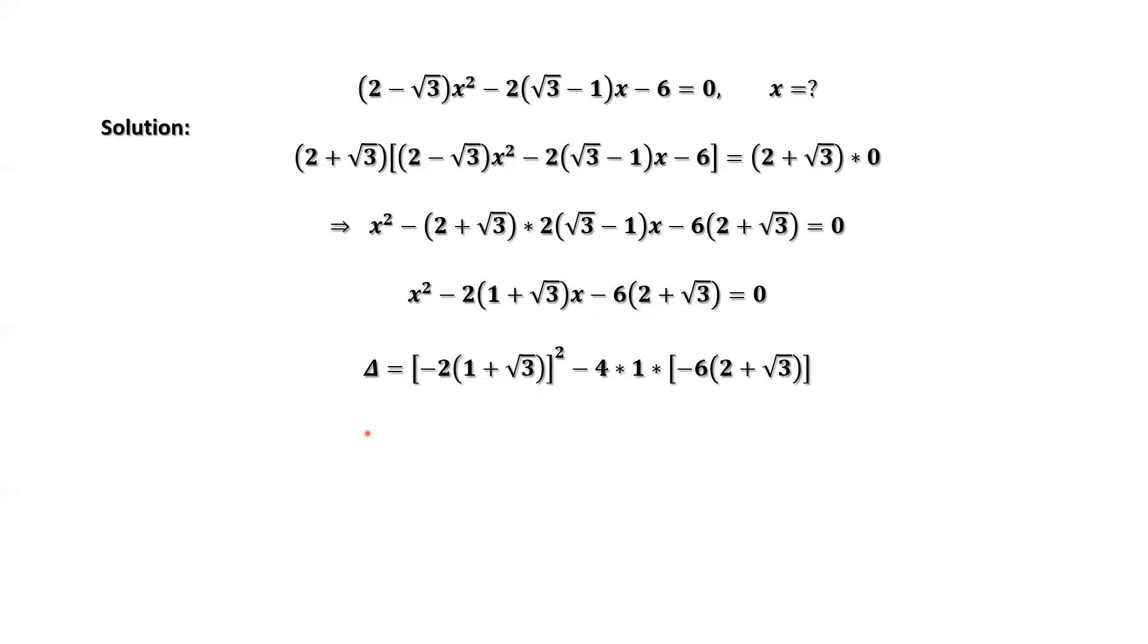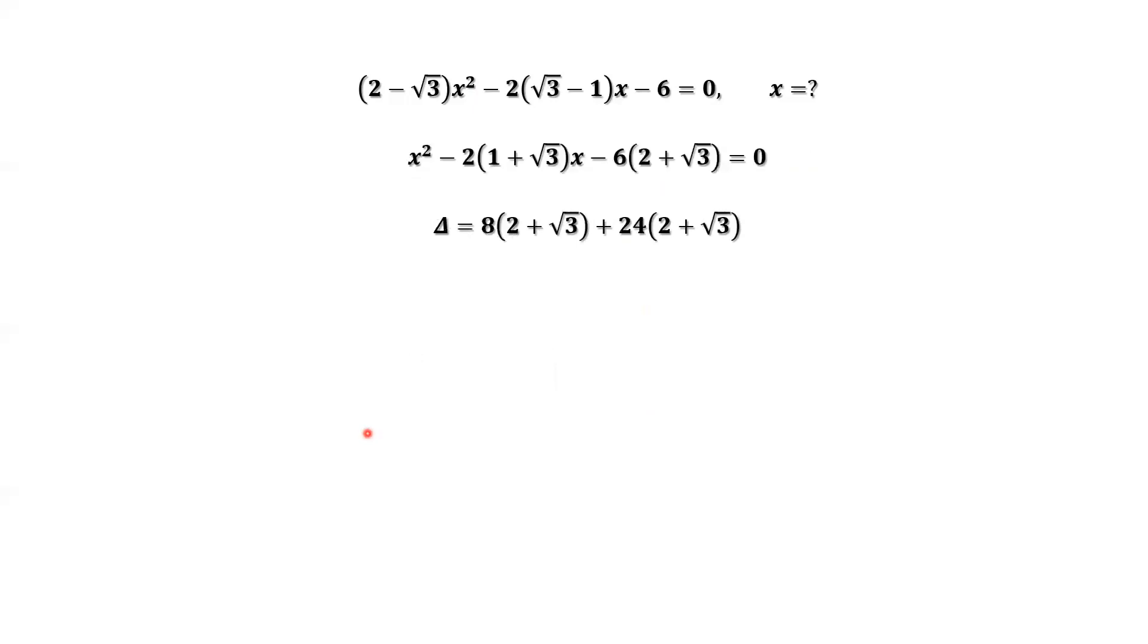Continue to simplify. We have Δ = 16(4 + 2√3). Based on the quadratic formula, we have the square root outside of the delta. 16 is 4². And 4 + 2√3 is (1 + √3)².